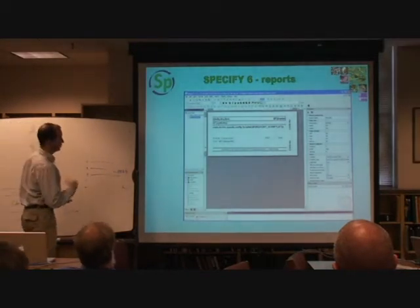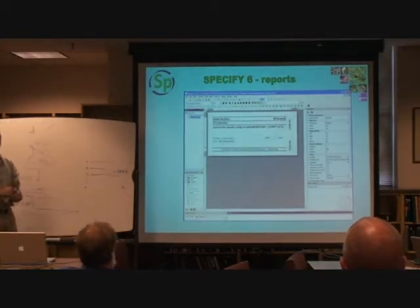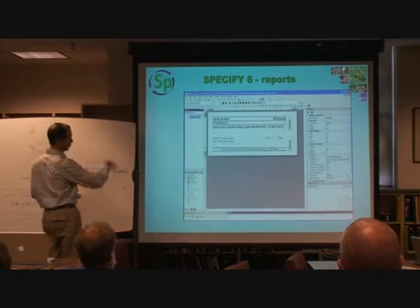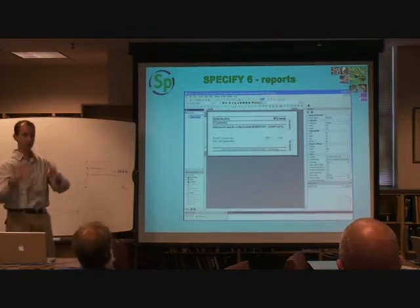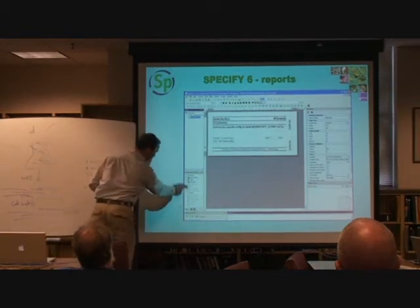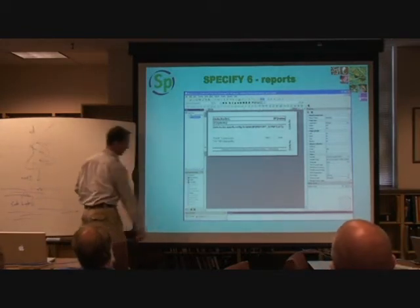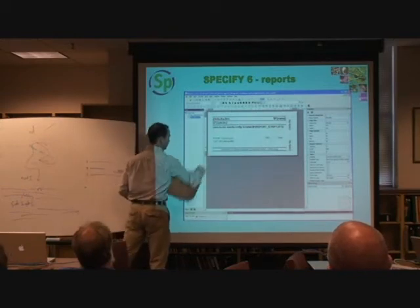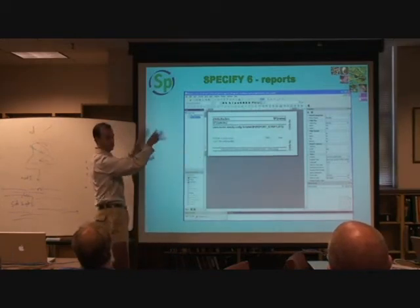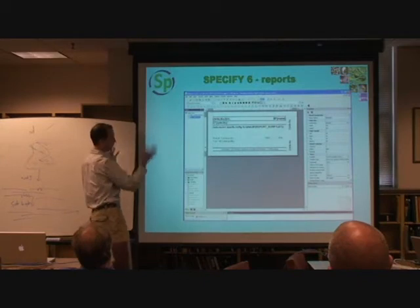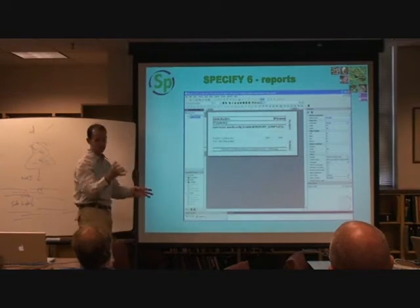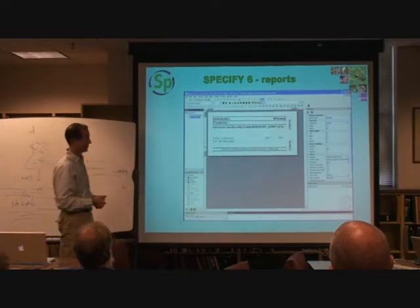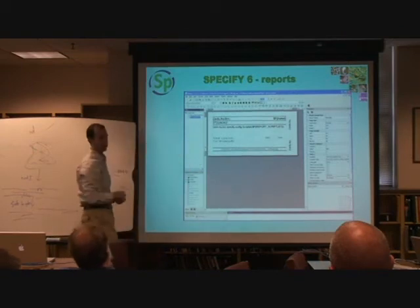The reporting system is much the same as it was in version 5 — it's an external piece of software called iReports, whereas in version 5 it was Rave. Essentially it takes a query from your database and links that query to a report in iReports. Once you've built the query, all of the fields are available and you can drag them onto the label you want to create, place them, change the font, and so on. It handles eight different kinds of barcodes, images, and pie charts — the world is your oyster.